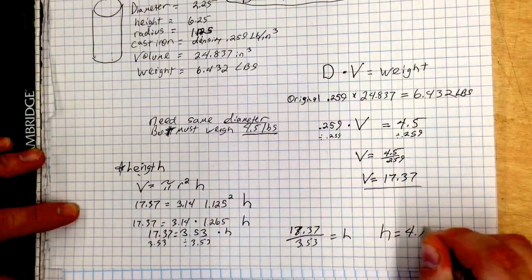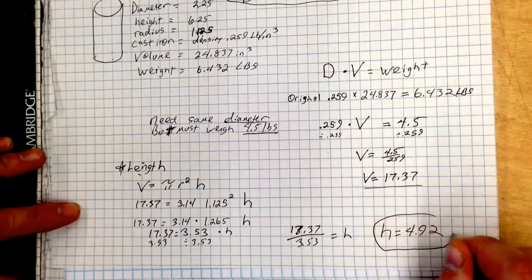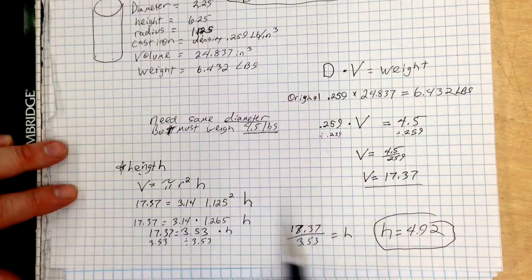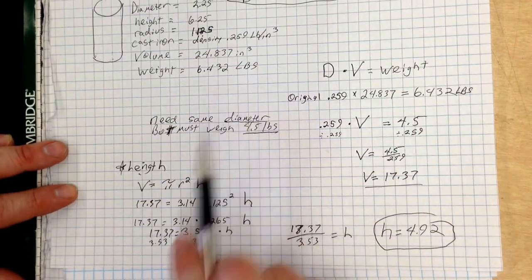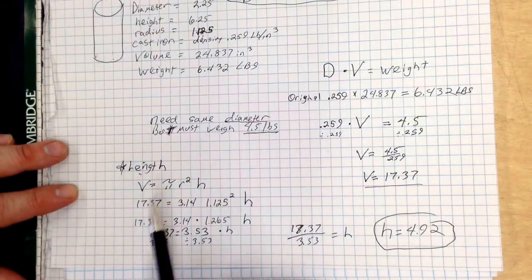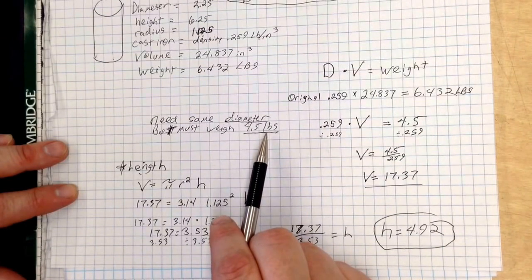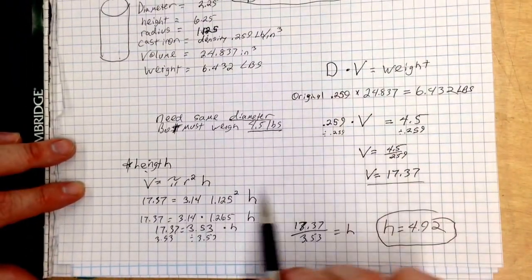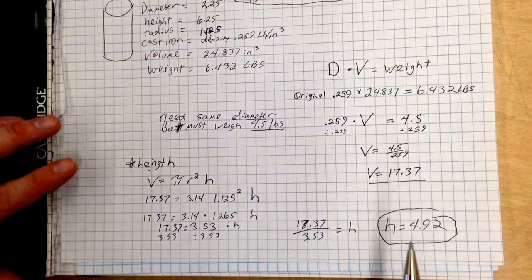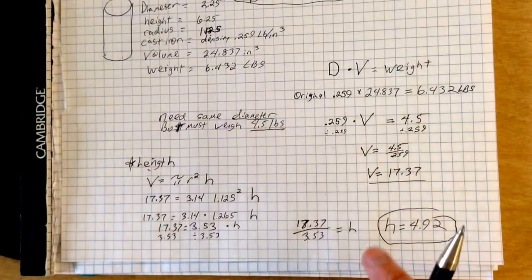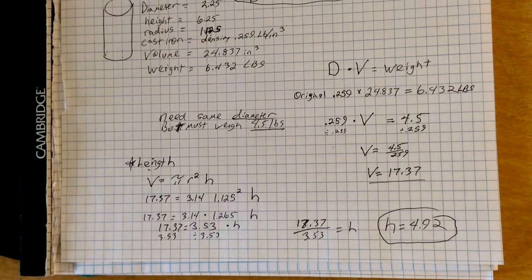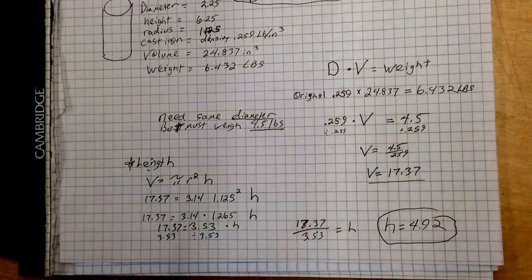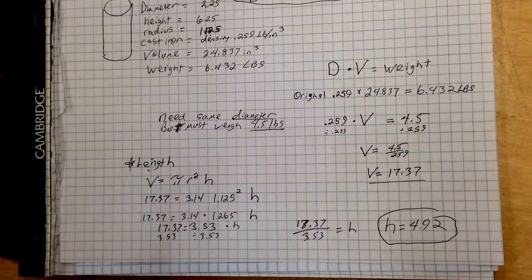So, h equals 4.92. And that's actually what the entire problem was calling for. We needed to maintain the diameter, which was 2.25, but we had to figure out, or it had to weigh 4.5 pounds. So, we had to basically work backwards through this equation. Now, this is an incredibly difficult problem. It is very involved. So, stop this video, rewind, and replay as many times as you need in order to understand the concept.